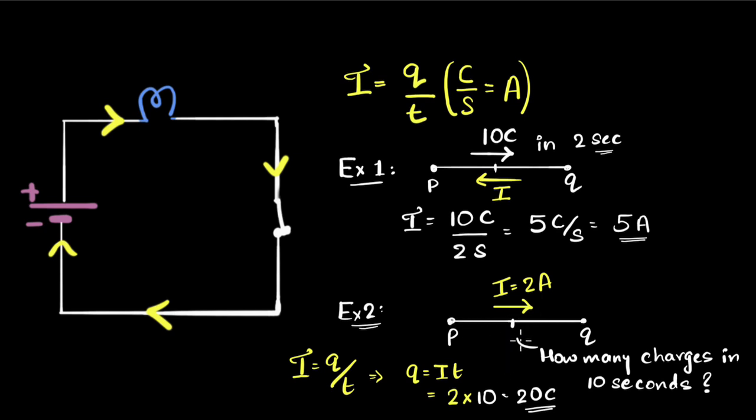If these are electrons, what direction are the electrons flowing? Well, if these are electrons, they will be flowing in the opposite direction. But if these were positive charges, hypothetically, then they would be flowing in the same direction.